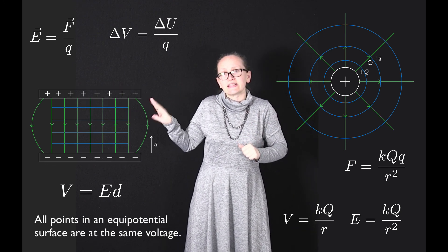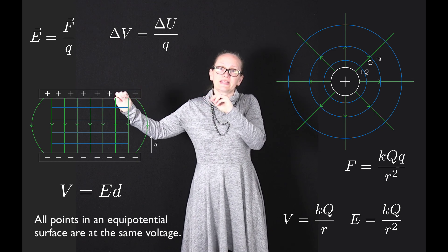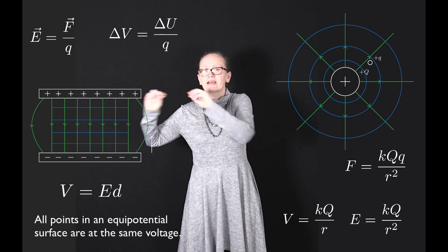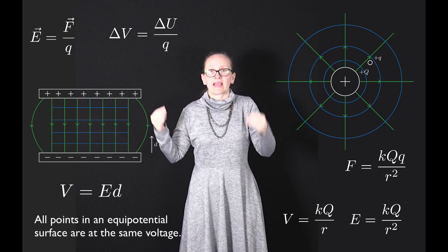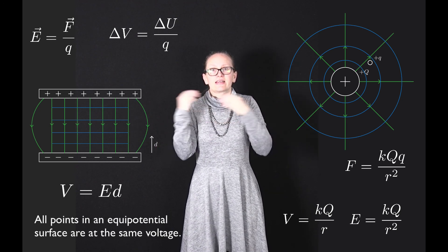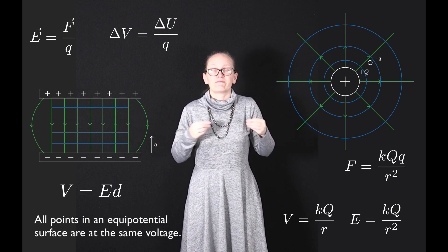In this case any points at the same distance, so any points which are forming our horizontal line there parallel to our plates, are going to be on an equipotential surface as they are all at the same voltage.